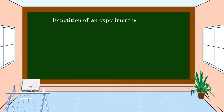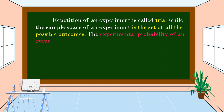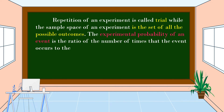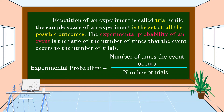Repetition of an experiment is called a trial, while the sample space of an experiment is the set of all possible outcomes. The experimental probability of an event is the ratio of the number of times that the event occurs to the number of trials. Thus, experimental probability equals the number of times the event occurs divided by the number of trials.